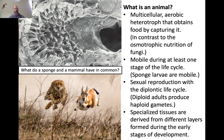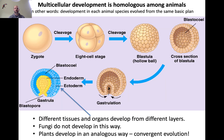Finally, animals have specialized tissues derived from different layers formed during the early stages of development. All animals develop from a zygote — the single-celled diploid stage that forms as a result of fertilization. The zygote undergoes rounds of mitosis until you have about eight cells, after which you form a hollow ball called a blastula. This hollow sphere is unique to animals; other multicellular organisms don't develop in exactly this way.